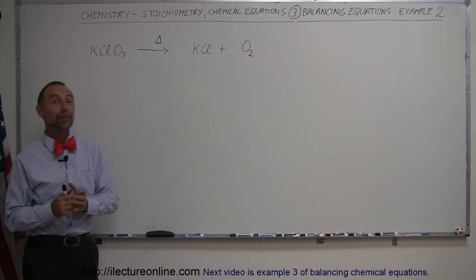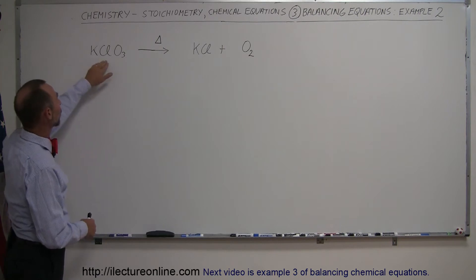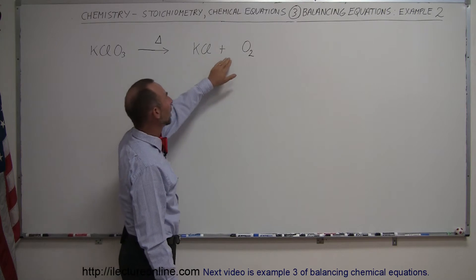Here's our next example of how to balance chemical equations. Now here we have an interesting equation: we have potassium chlorate that will then react and yield potassium chloride and oxygen.